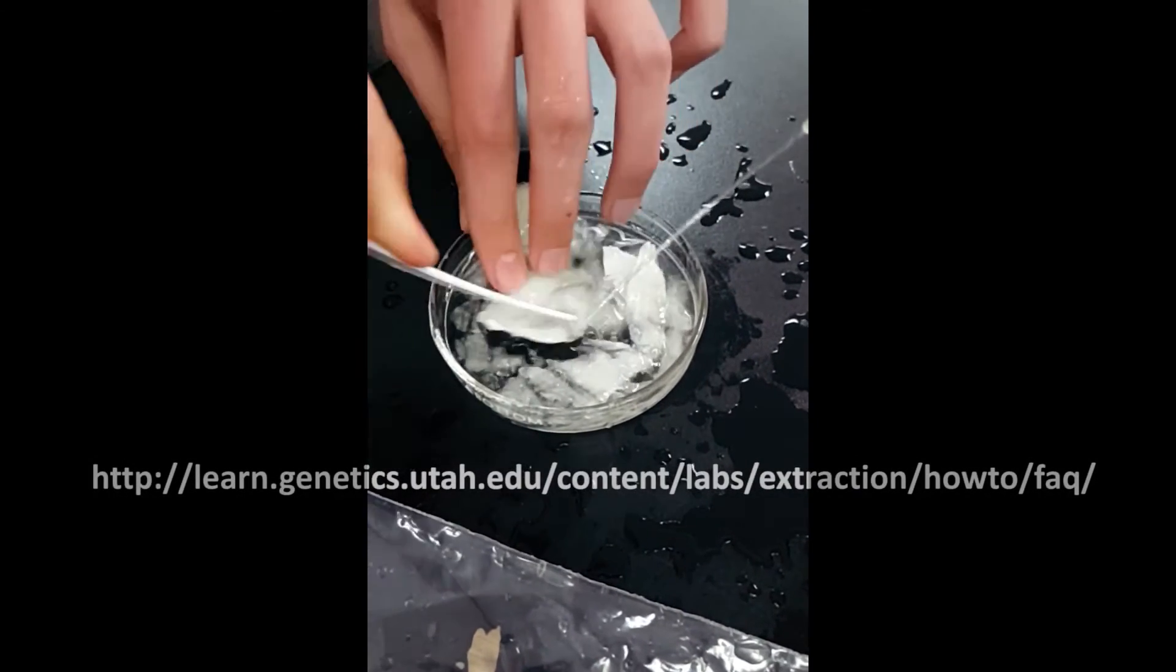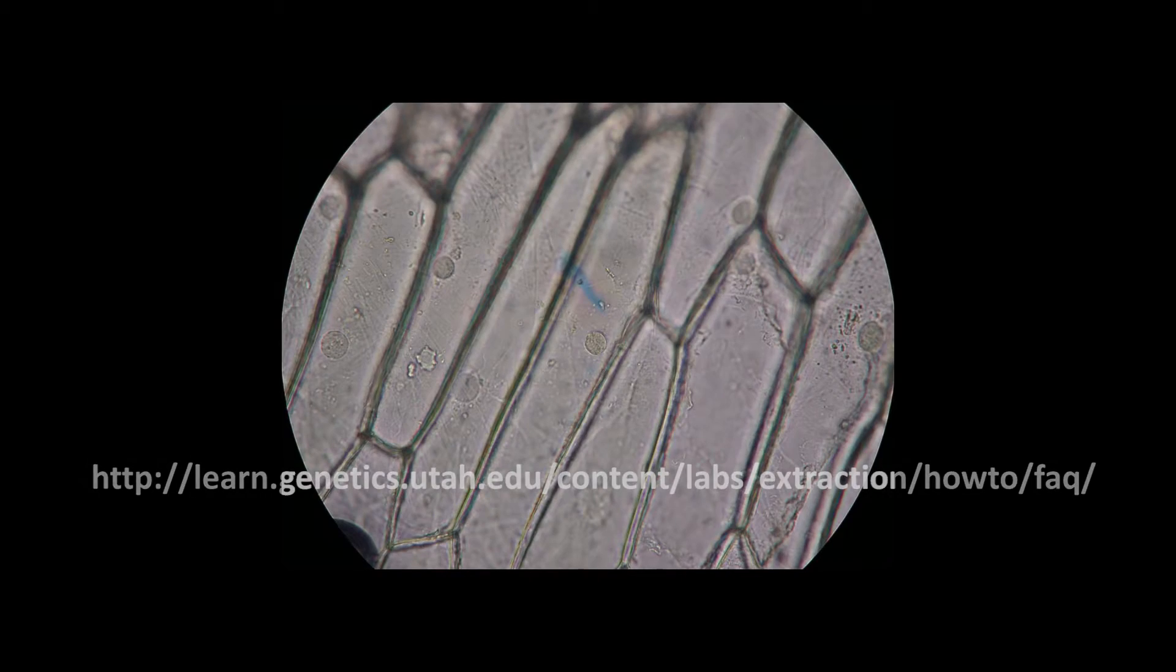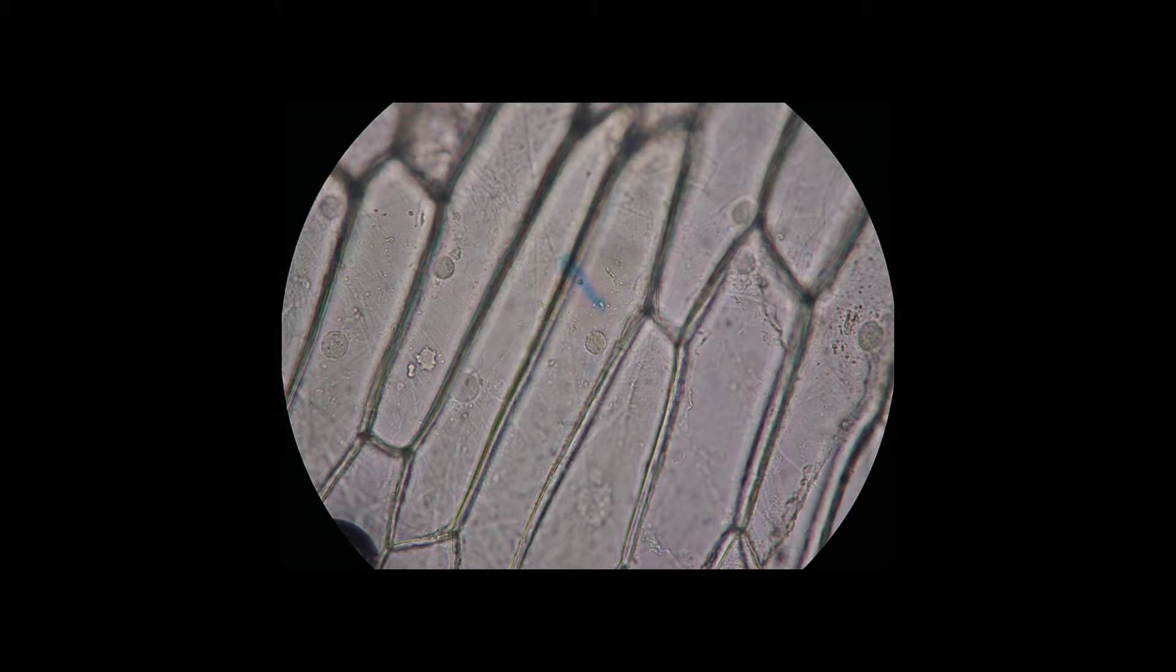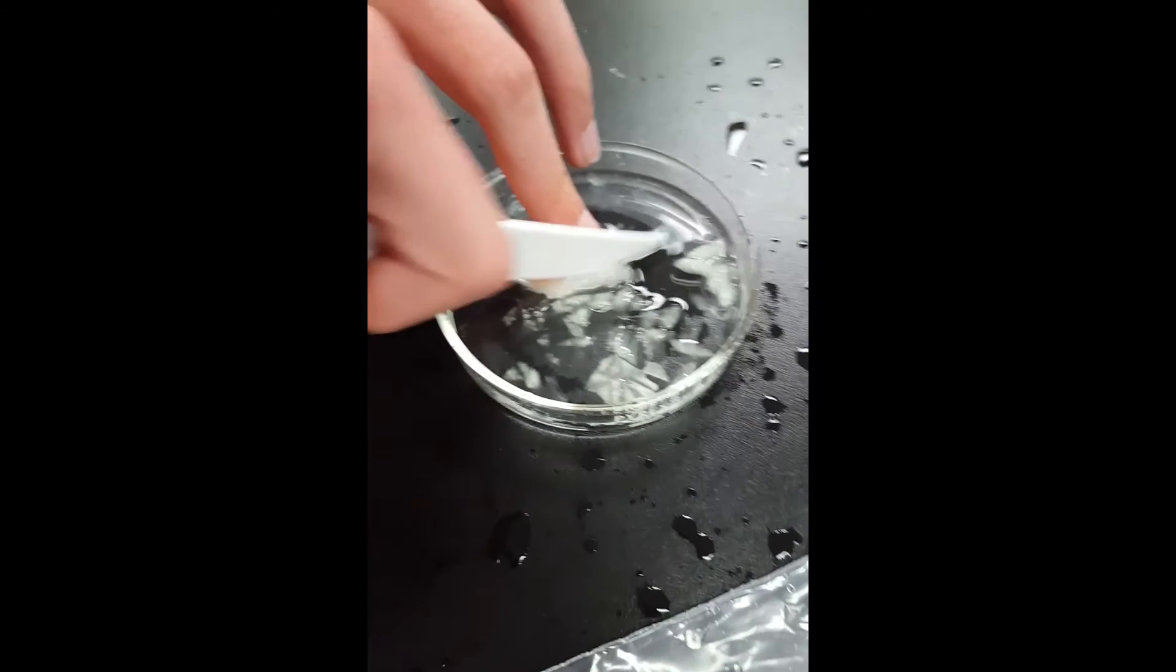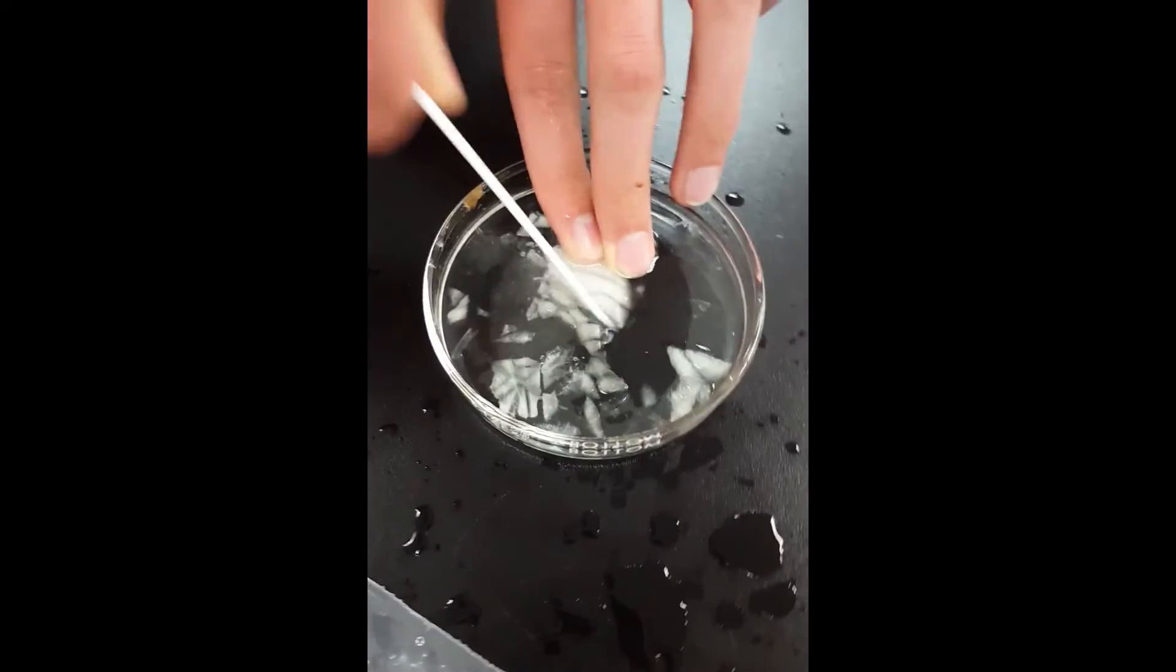We do this to break the cell walls of the plant cells so that our DNA extraction solution can enter the cell and actually extract DNA. We also do this to increase the surface area of the onion so more DNA can be extracted.